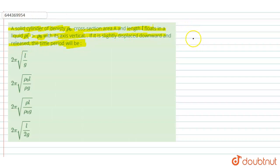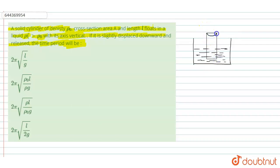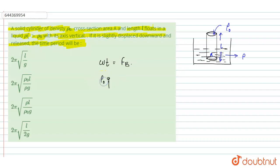Let us consider this figure: a container is filled with a liquid having density rho. A cylinder is placed in it having cross-sectional area A and length L. The density of the cylinder is rho naught and the density of the liquid is rho.